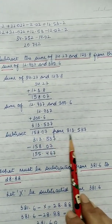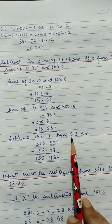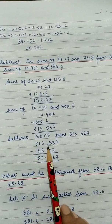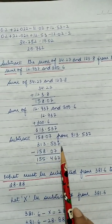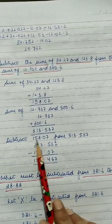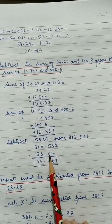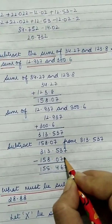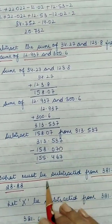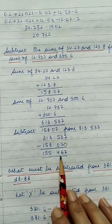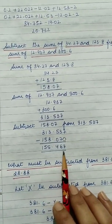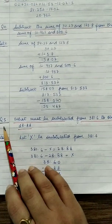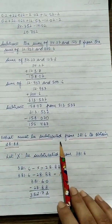Whenever 'from' is used, write the second term first. So 313.537 minus 158.07 — when you subtract, you will get 155.467. This is our answer.